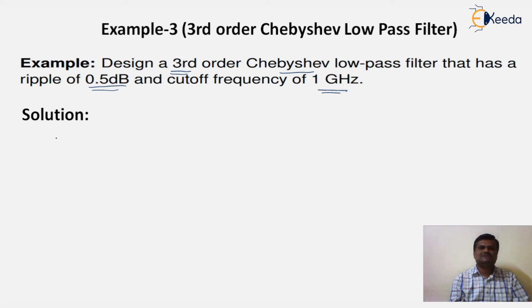Solution: First write the given data. They have given directly the order of filter, N equal to 3. In the previous problem, we calculated the order of filter in step number one, so here I directly write it. Next, the ripple value given is 0.5 dB. fc cutoff frequency equal to 1 gigahertz.